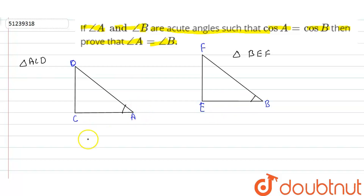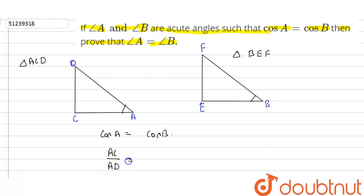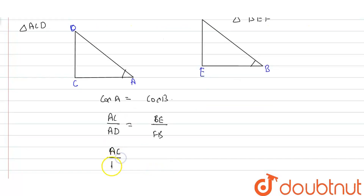So, given that cos A is equal to cos B. This means AC upon AD is equal to BE upon BF.